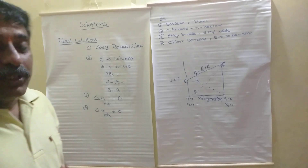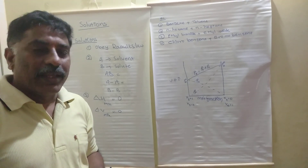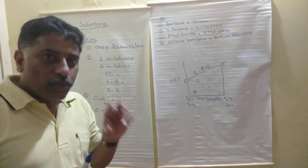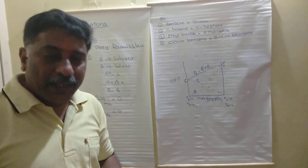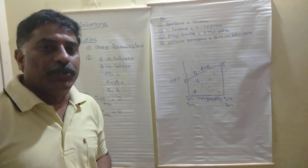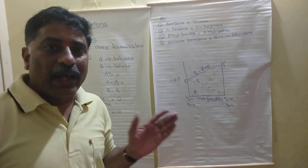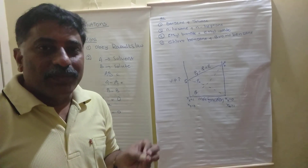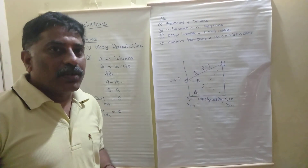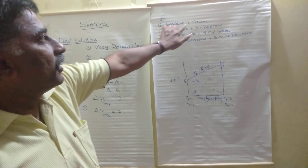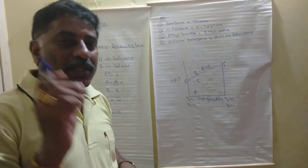Which type of solutions form ideal solutions? The two components — solvent and solute — must have similar chemical structures and the same polarity. If they have similar chemical structures and the same polarity, then those types of solutions form ideal solutions. One of the best examples is benzene and toluene.